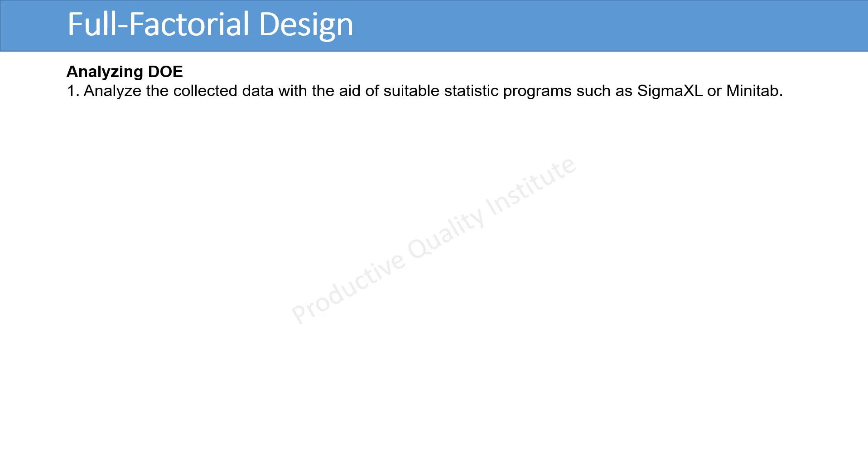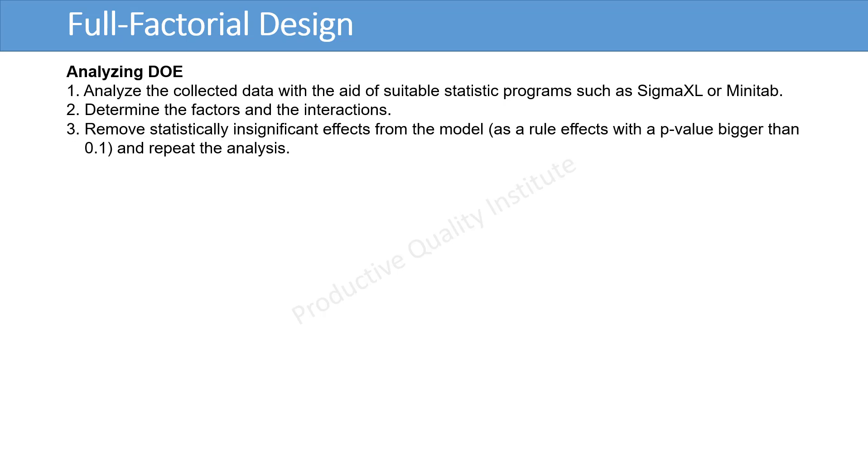To analyze DOE, follow the steps. 1. Analyze collected data with the aid of suitable statistic programs such as Sigma XL or Minitab. 2. Determine the factors and the interactions. 3. Remove statistically insignificant effects from the model. As a rule, effects with p-value bigger than 0.1, and repeat analysis.